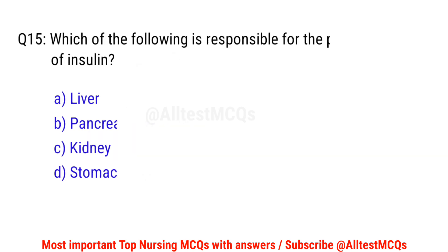Question number 15. Which of the following is responsible for the production of insulin? The correct option is B: Pancreas.